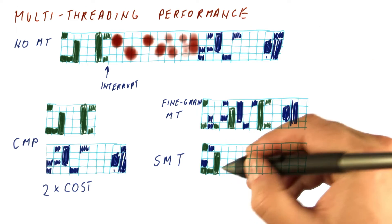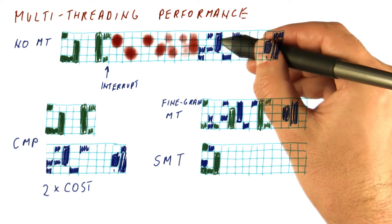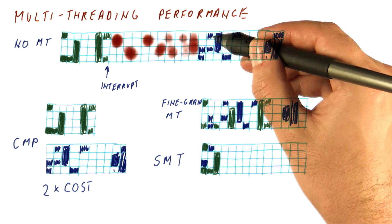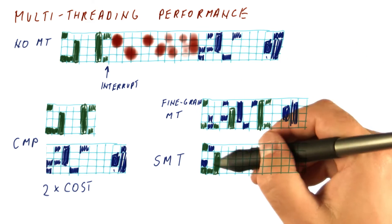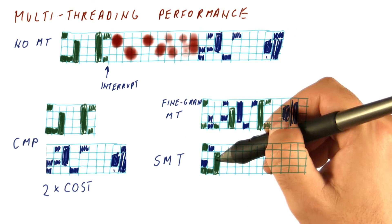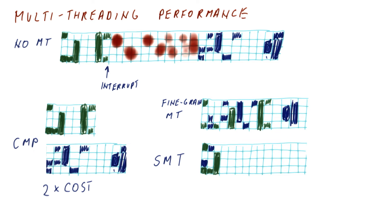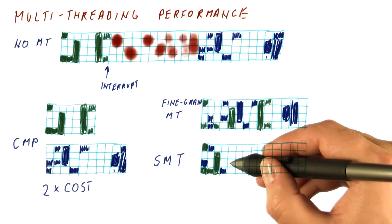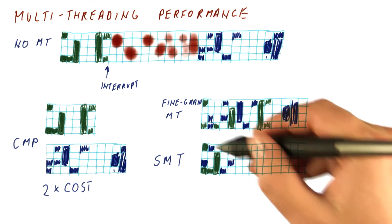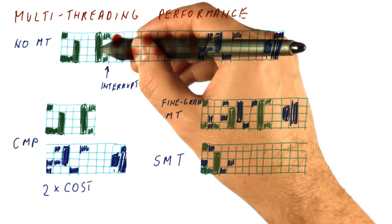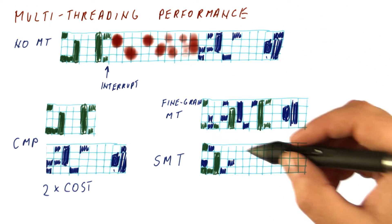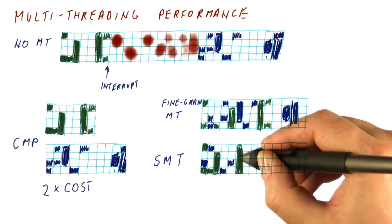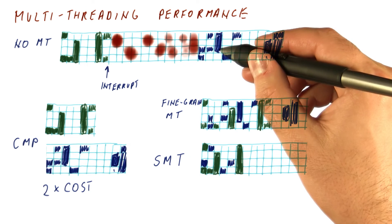Next cycle, the green thread can proceed, and from the blue thread we may or may not be able to execute depending on dependencies. During a period of idleness in the green thread, the blue thread gets to make up for missing out — executing dependent instructions as they become ready. When the green thread is ready to run again, we can choose priority. If the green thread has higher priority, we always try to execute its instructions first and only fill the gaps with blue thread instructions.